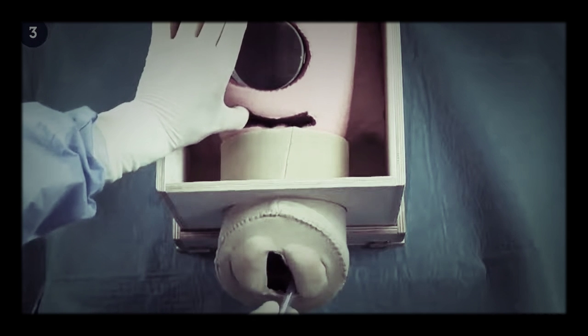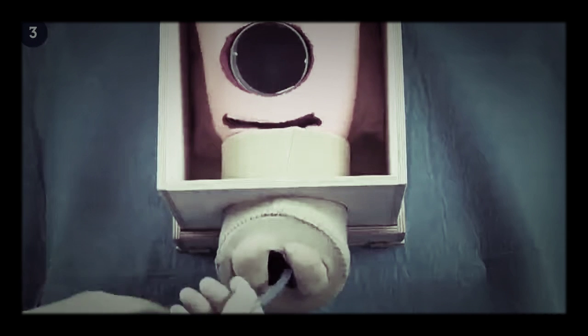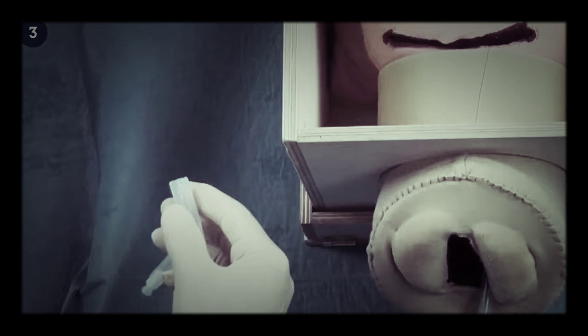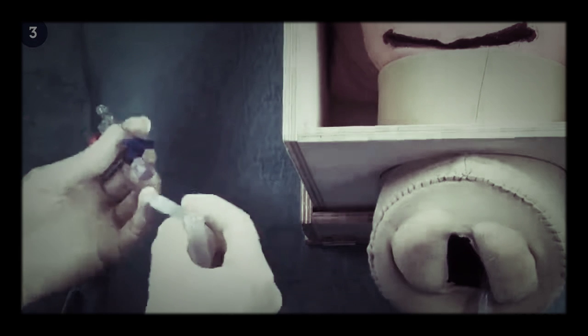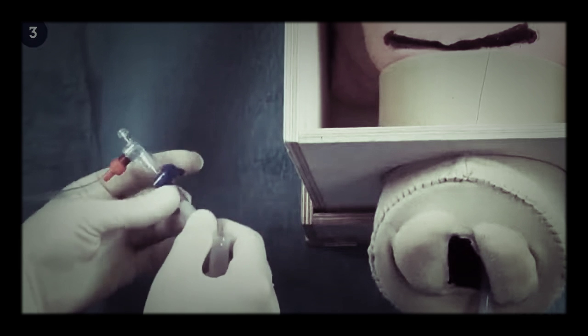The uninflated balloon is passed through the caesarean incision into the uterine cavity. The inflation port is pulled through the vaginal canal until the base of the balloon reaches the internal ostium. The drainage port and inflation port are separated again and the giving set is connected as previously shown.